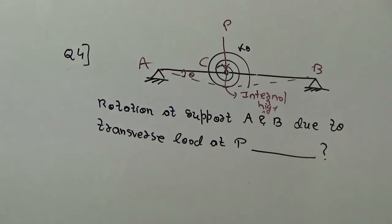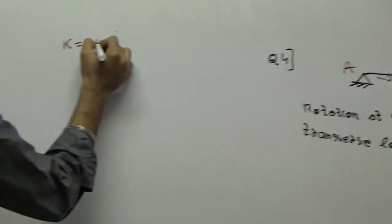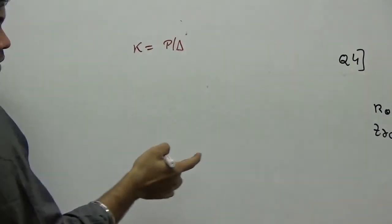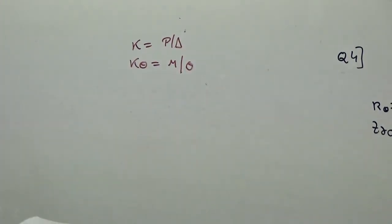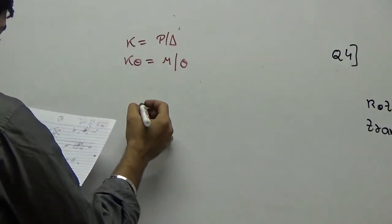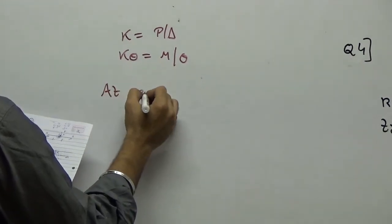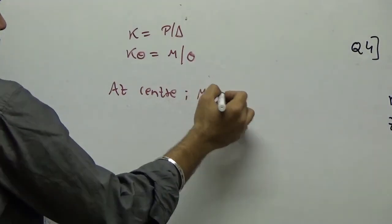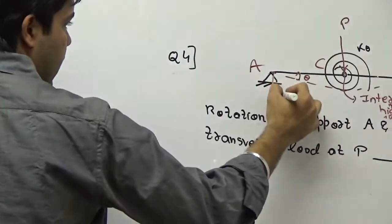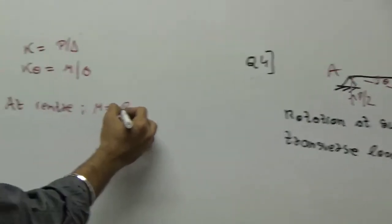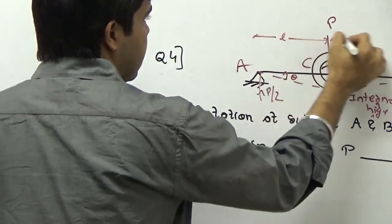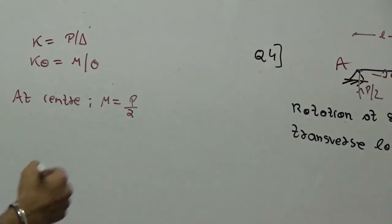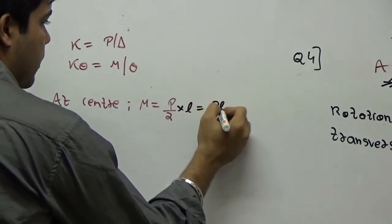It's a very easy problem — you just need to know the basics of stiffness. Stiffness is K equals P by delta. Since there is a rotatory spring, K-theta equals M by theta. Due to the load P, the reaction at the center is P by 2. So the moment at the center is P by 2 into L, giving PL by 2. The span is noted here as total 12 units.